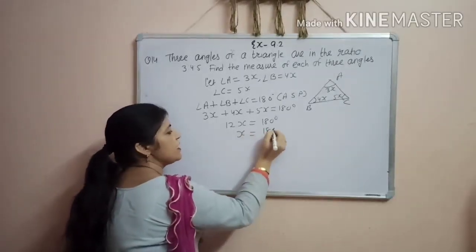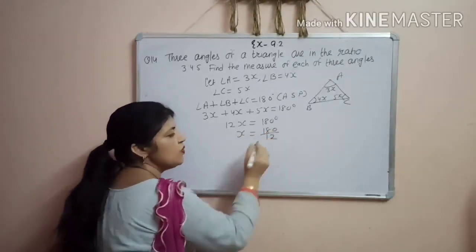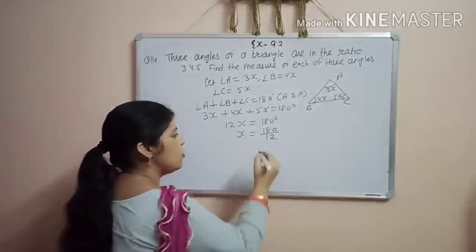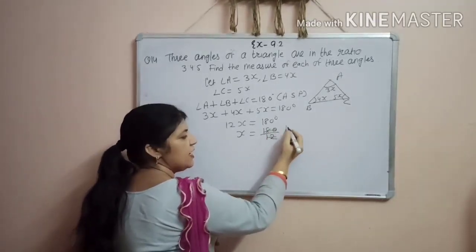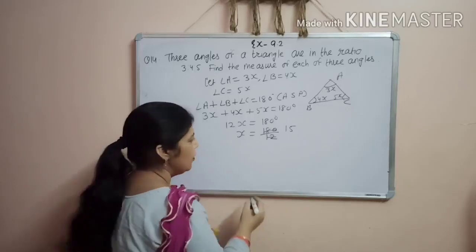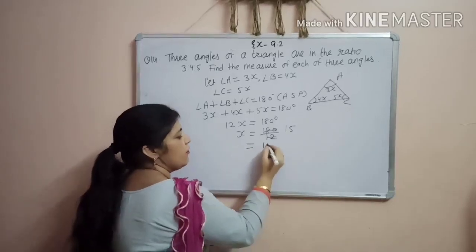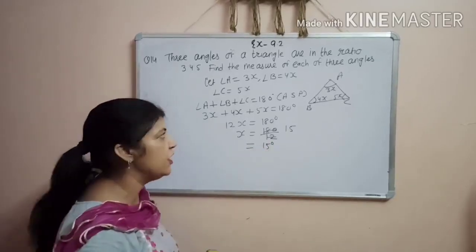Now, to find the value of x, we will shift 12 towards right hand side. Now, 12 into... 1, 12, 6 carry, 12, 5, 16, okay. So, value of x is 15 degree.